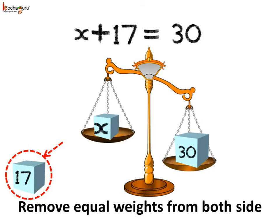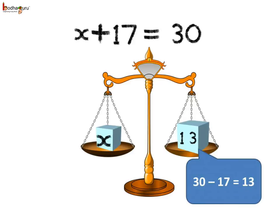We have to subtract the same weight from the other pan too, that is the pan on the right hand side. Otherwise, the weight would be imbalanced. So, let us remove 17 from both sides. 30 minus 17 is equal to 13. We can say x is equal to 13, as both sides are balanced. So we found the value of x, which is 13.